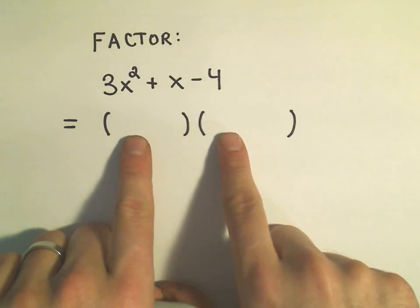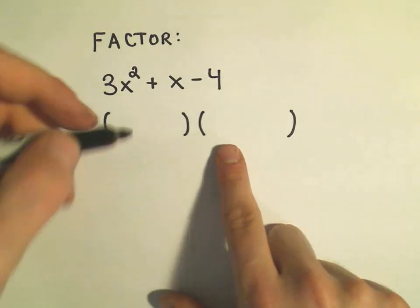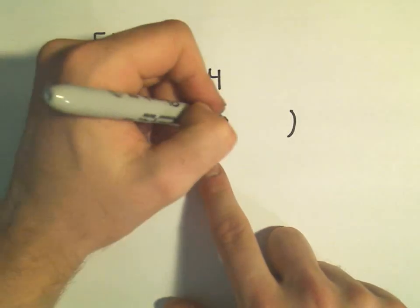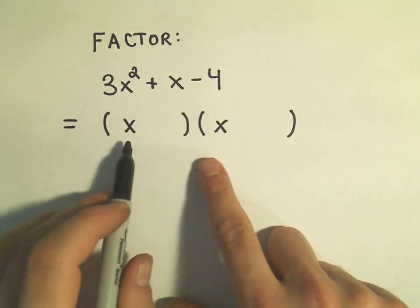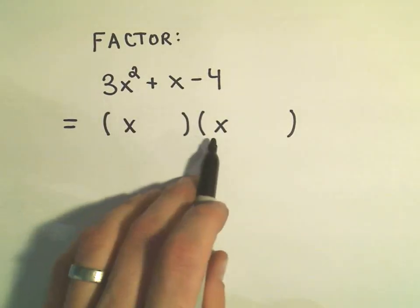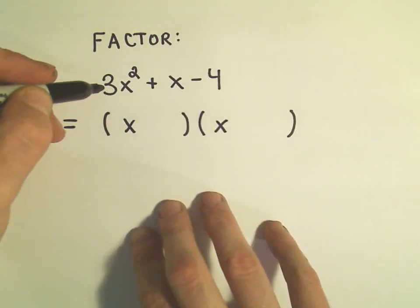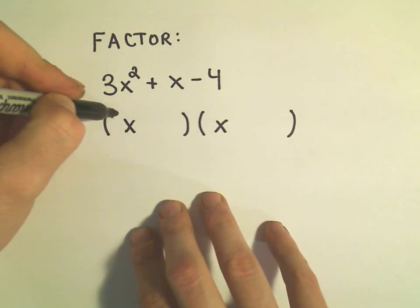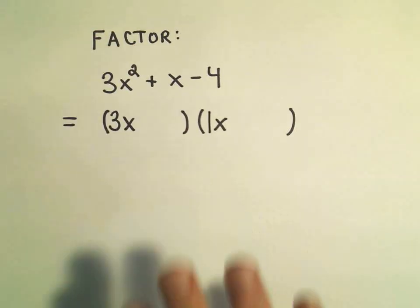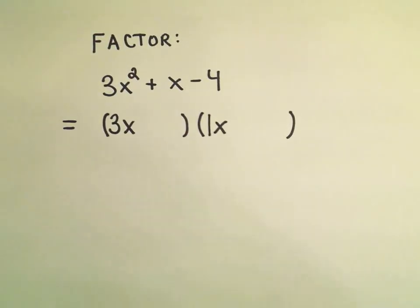Okay, when I multiply the first two terms, I'm going to try to get the 3x squared. Well, the only way to get the x squared would be to have an x and an x, at least if we use whole number exponents. Likewise, to get 3, the only thing I can really use is a 3 and a 1, again, using whole numbers. Okay, so far, so good.